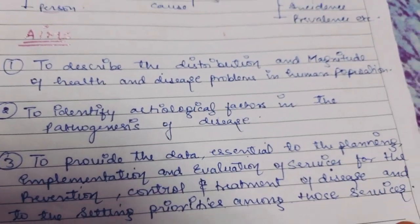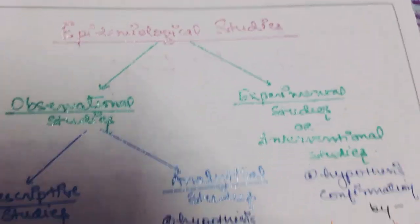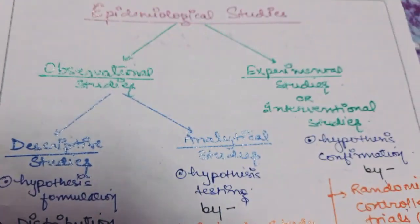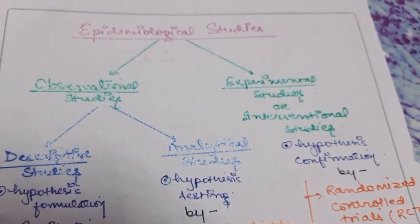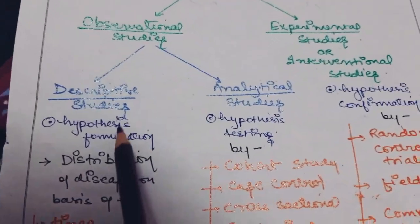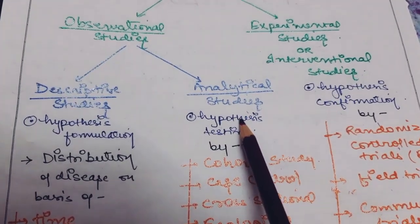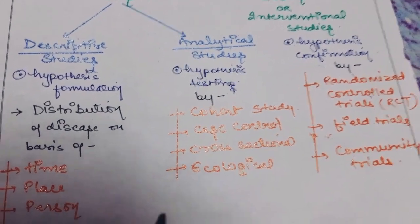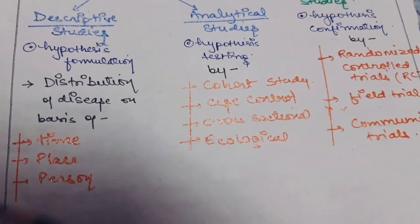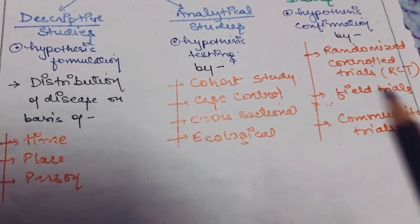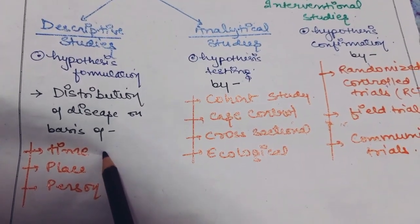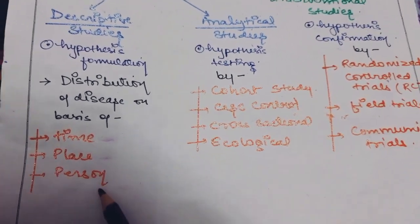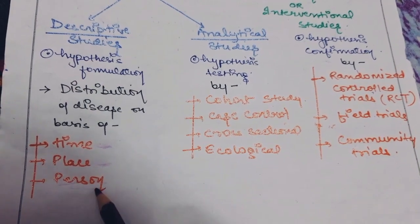To fulfill these aims there are certain studies, broadly classified as observational studies and experimental studies. In observational study we only observe the natural history of disease — we don't do any intervention. There are descriptive studies and analytical studies. In descriptive studies we try to find answers to three questions: when, where, and who — telling us the time distribution, place distribution, and person distribution of the disease.